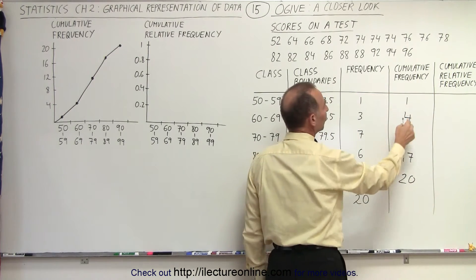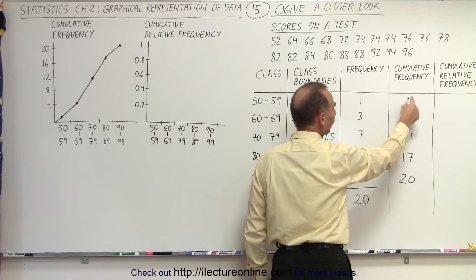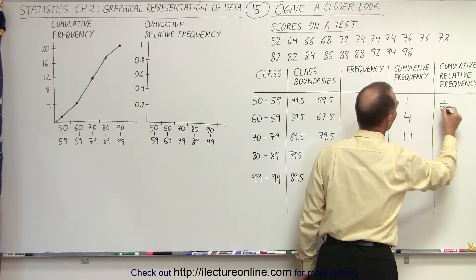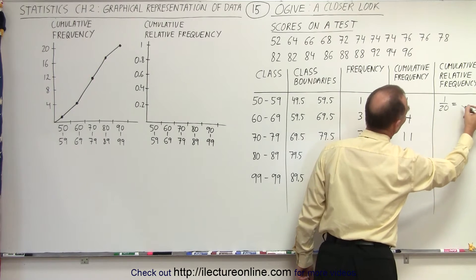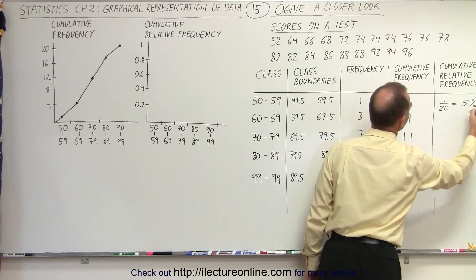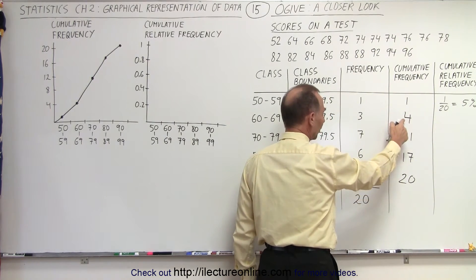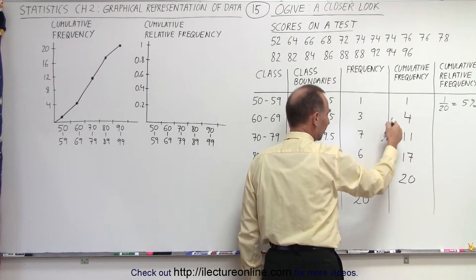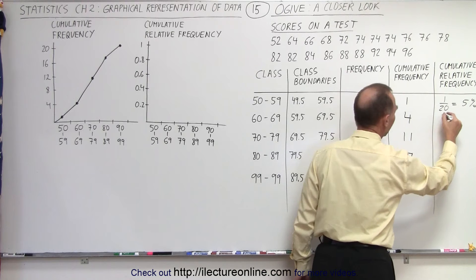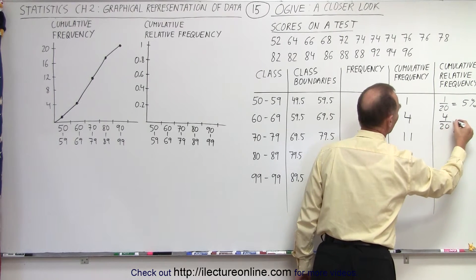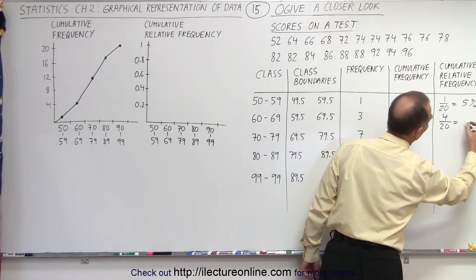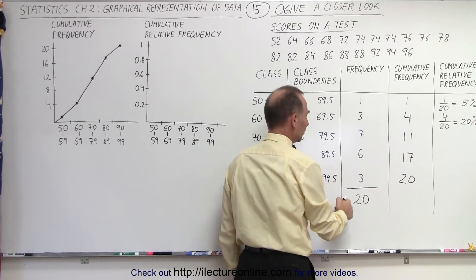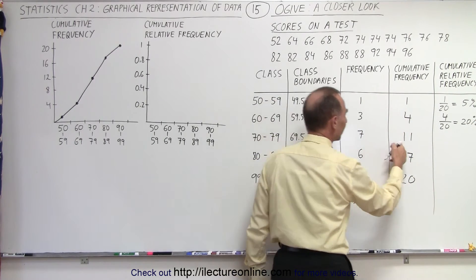In other words, what is the fraction or percentage of 1 out of 20? So this would be an equivalent frequency of 1 out of 20, which is equal to 5%. Then if we add three more to that, so we have a total of four data points in the first two classes together, that will be 4 out of 20. And 4 out of 20, that would be equal to 20%. And then if we continue, we add another 7 to that, we have 11.